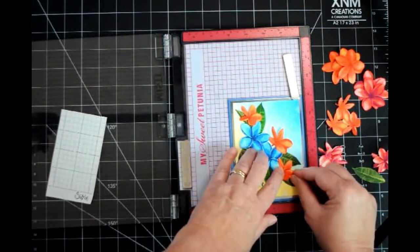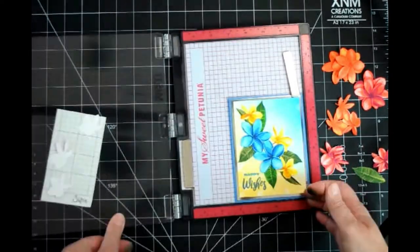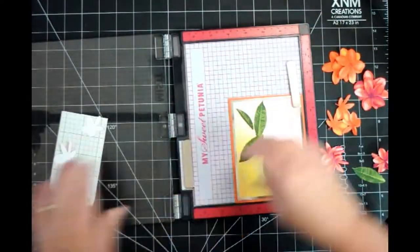I am still using an eighth of an inch score tape to adhere all the small flowers to the duplicate card.